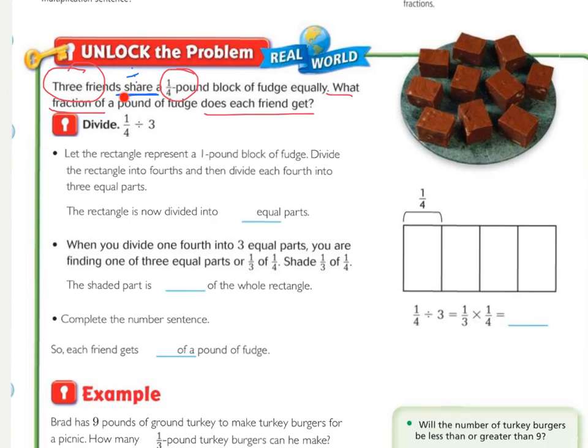I use blue to underline the word share because generally when you're sharing something you're going to be dividing. So that's a key word to know that we have a division problem here. So how much do we have? We have 1/4 of a pound and we're dividing it by how many friends? We're sharing it by 3 friends. So we have 1/4 divided by 3.